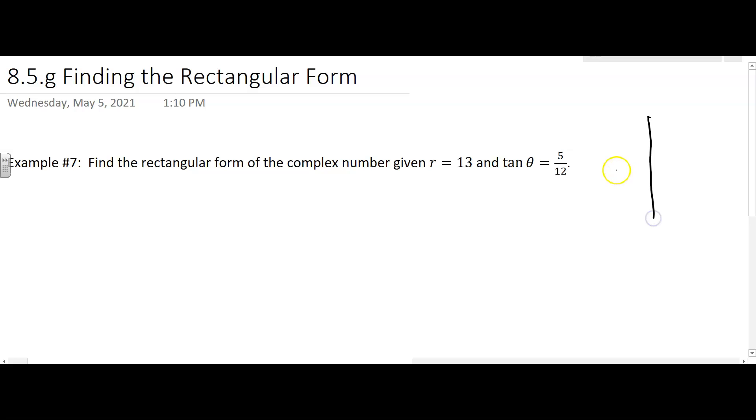If you were to graph this, if you had some theta here and you know the radius is 13, and the y is 5 and the x is 12 because tangent is y over x, this isn't drawn to scale, you could set up a triangle that way.